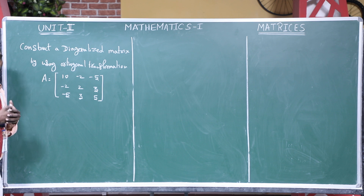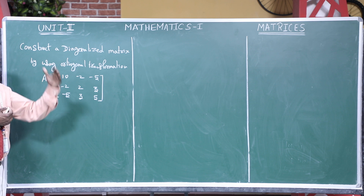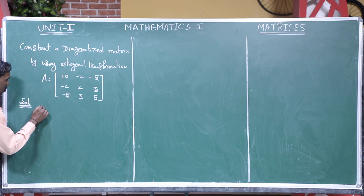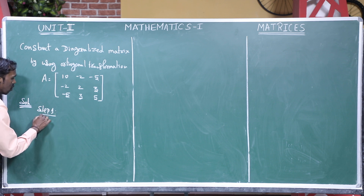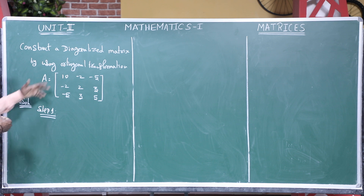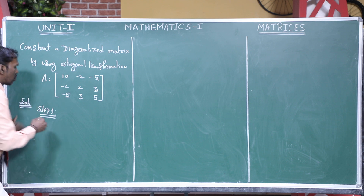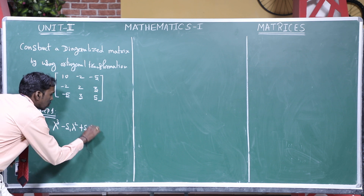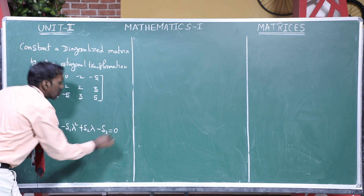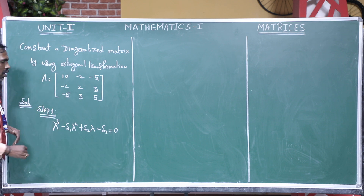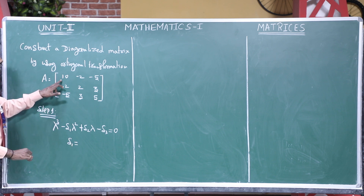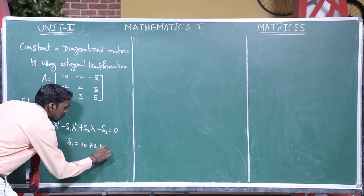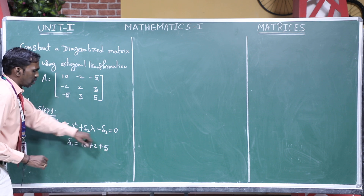Step 1: we find out the characteristic equation. This is a 3×3 matrix. The formula is λ³ - S₁λ² + S₂λ - S₃ = 0. S₁ is the sum of the main diagonal elements: 10 + 2 + 5 = 17.